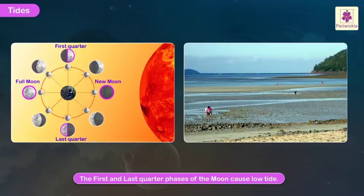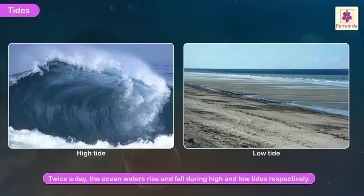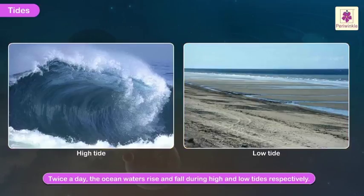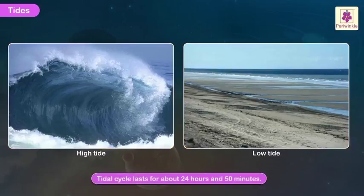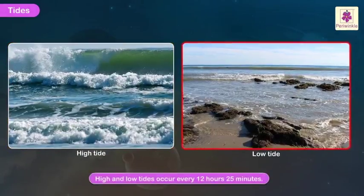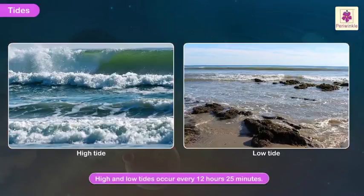Twice a day, the ocean waters rise and fall during high and low tides respectively. This tidal cycle lasts for about 24 hours and 50 minutes. Due to this, high or low tides occur every 12 hours and 25 minutes.